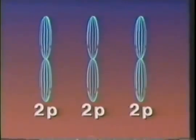Unlike the 2s orbital, however, the 2p orbitals each contain two lobes, which somewhat resemble dumbbells. So far, so good.